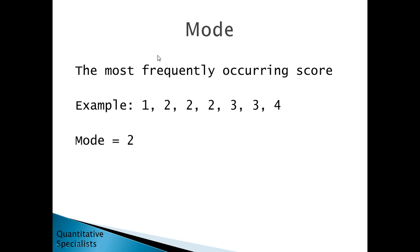Let's start with the mode. Mode is the most frequently occurring score. If we had the following example: 1, 1, 3, 2's, 2, 3's, and 1, 4, the score that occurs the most frequently is 2. There are 3, 2's there, so our mode would be equal to 2.